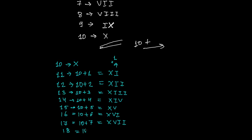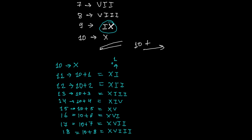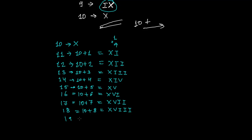For 17, it's 10 plus 7 — that is XVII. For 18, it's 10 plus 8 — XVIII. Now an important rule applies again: I cannot be written more than 3 times. So for 19, I can't just keep adding I's. Instead, 19 is written as XIX — X for 10, then IX for 9 — because IX represents 10 minus 1, which is 9.